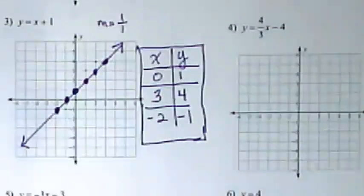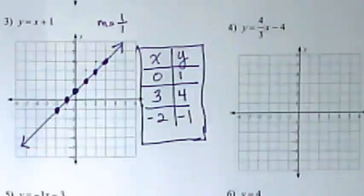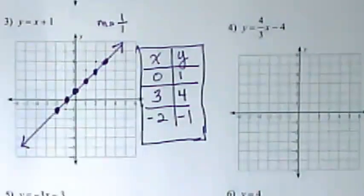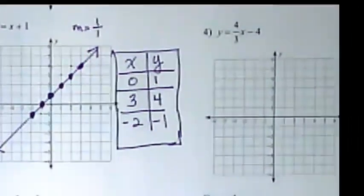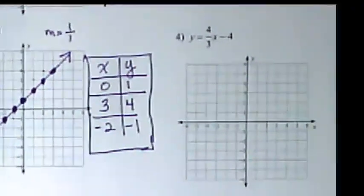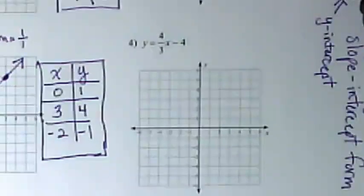Again, your table may not look exactly like mine, but as long as your graph does, your line on the graph, then we're good. It just means you pulled different pairs and you maybe put different points on your graph.